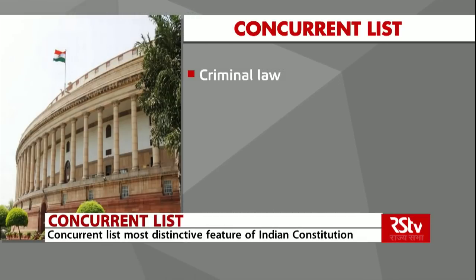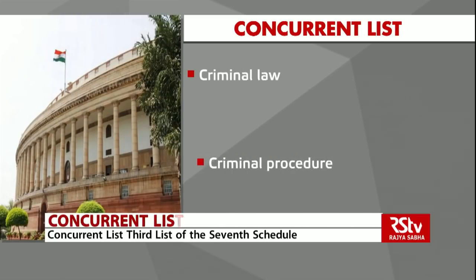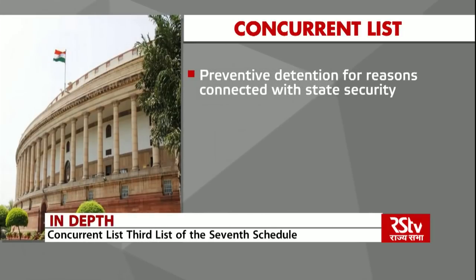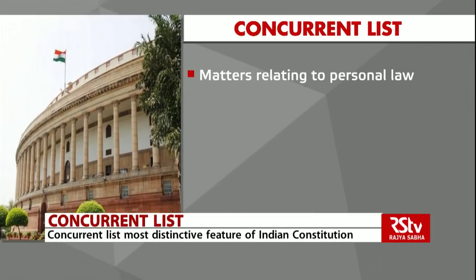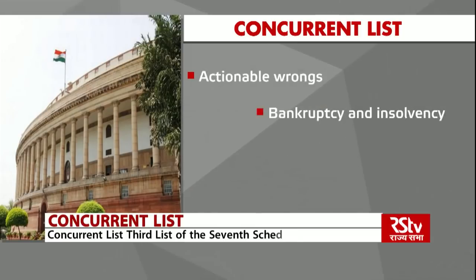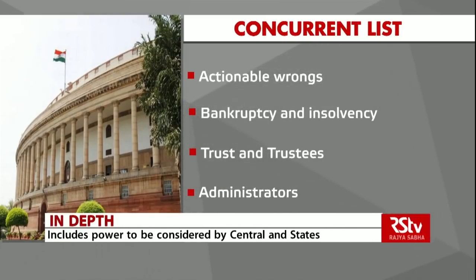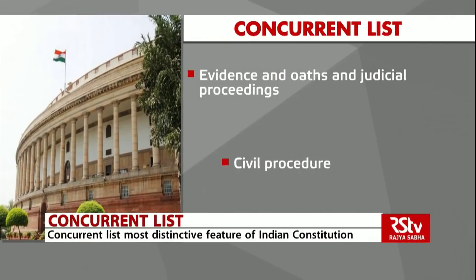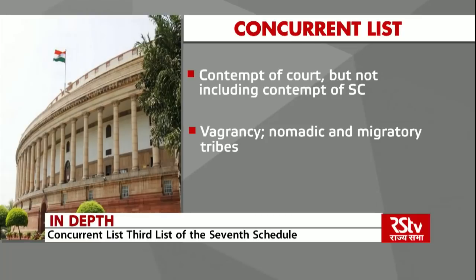The 52 items currently on the list are: criminal law including all matters included in the Indian Penal Code, but excluding the use of naval, military or air forces. Criminal procedure including all matters included in the Code of Criminal Procedure. Preventive detention for reasons connected with the security of a state. Removal from one state to another of prisoners. Matters relating to personal law. Transfer of property other than agricultural land. Contracts including partnership, agency and other special forms of contracts. Actionable wrongs, bankruptcy and insolvency. Trust and trustees. Administrators-general and official trustees. Evidence and oaths and judicial proceedings. Civil procedure. Contempt of court but not including contempt of the Supreme Court. Vagrancy, nomadic and migratory tribes.